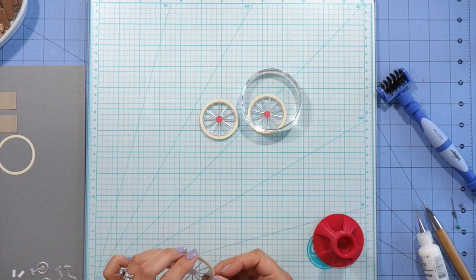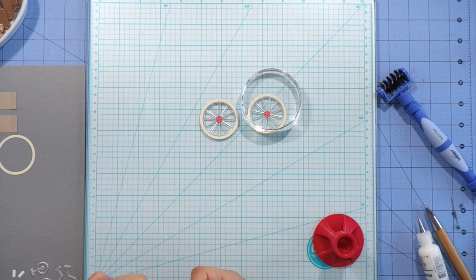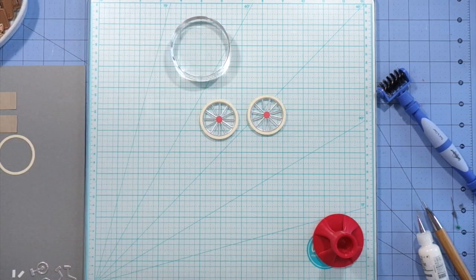Once I get all the pieces glued I'm going to flip over the tire and add a cream colored tire to the back of the spoke as well. Now ideally my silver colored cardstock would be silver on both sides, but it's only silver on one side, but I'm going to make it work.